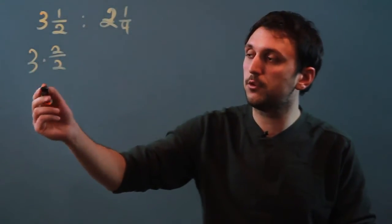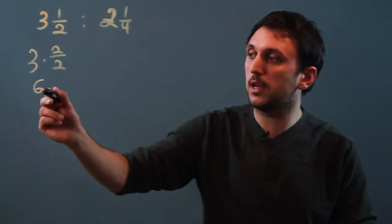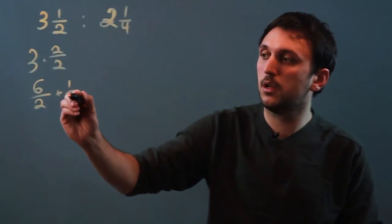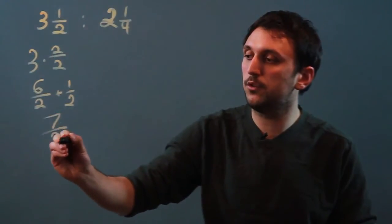So three times two over two is six over two plus that extra one half up here is going to give us seven over two.